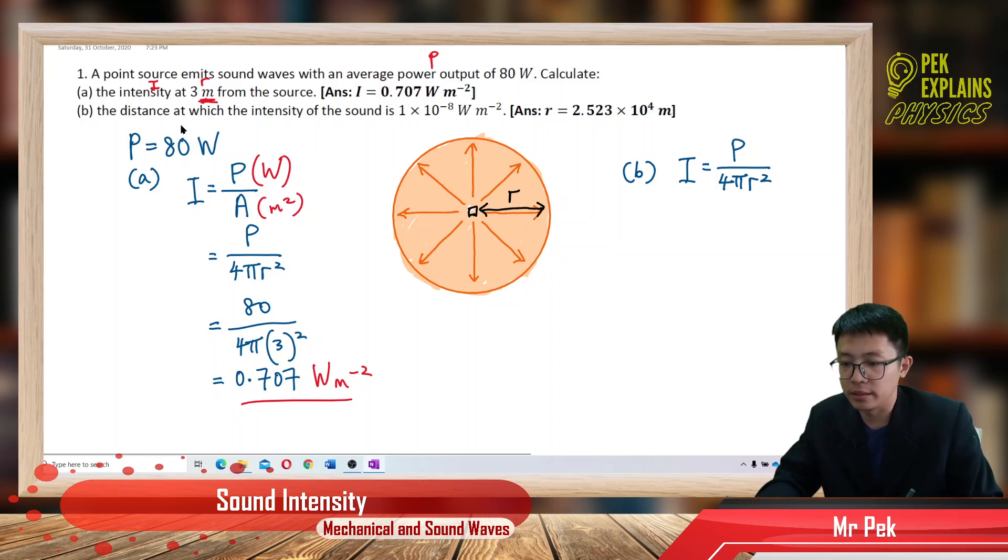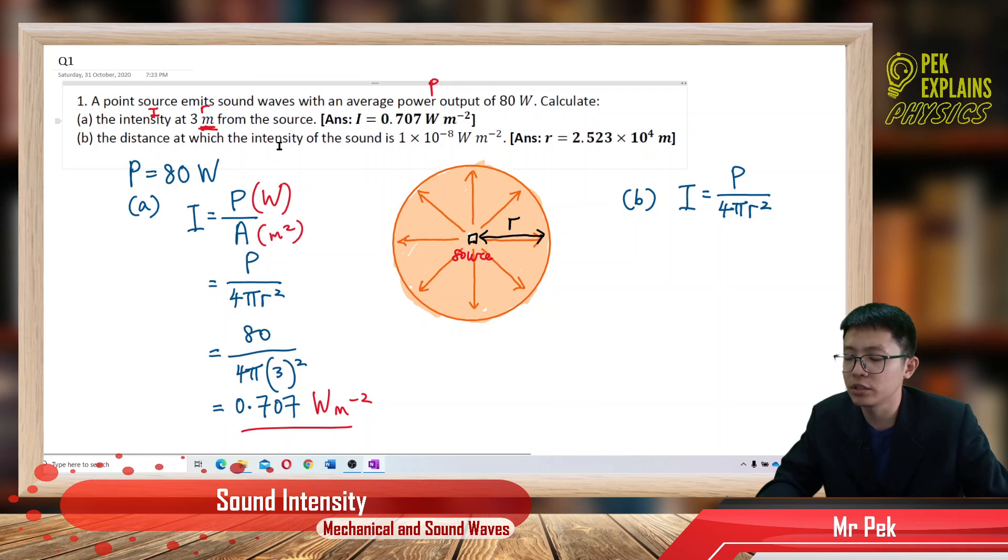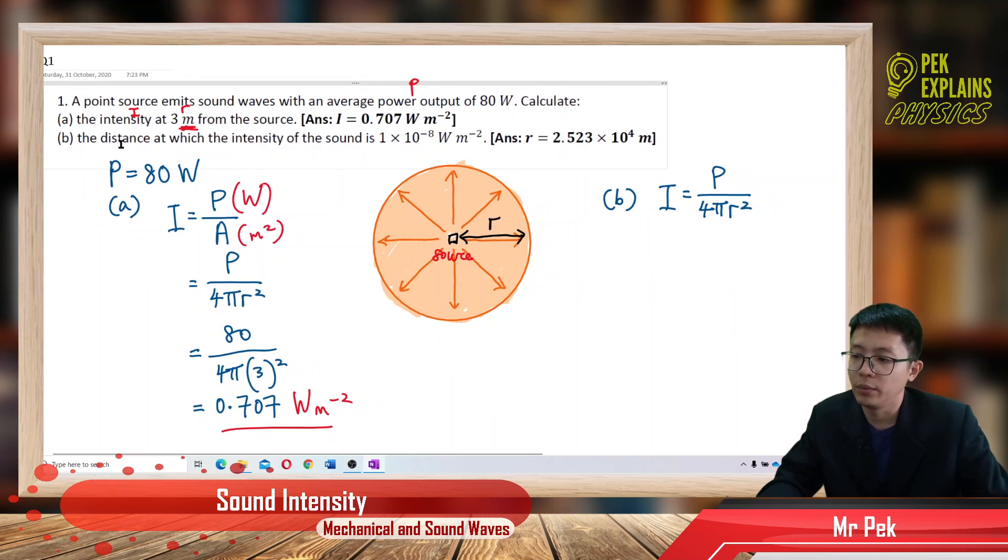Now, this center is the source. What is the distance at which the intensity of sound becomes 1×10⁻⁸ W/m²? What distance? I'm asking for R. You want the R. The intensity is this value.